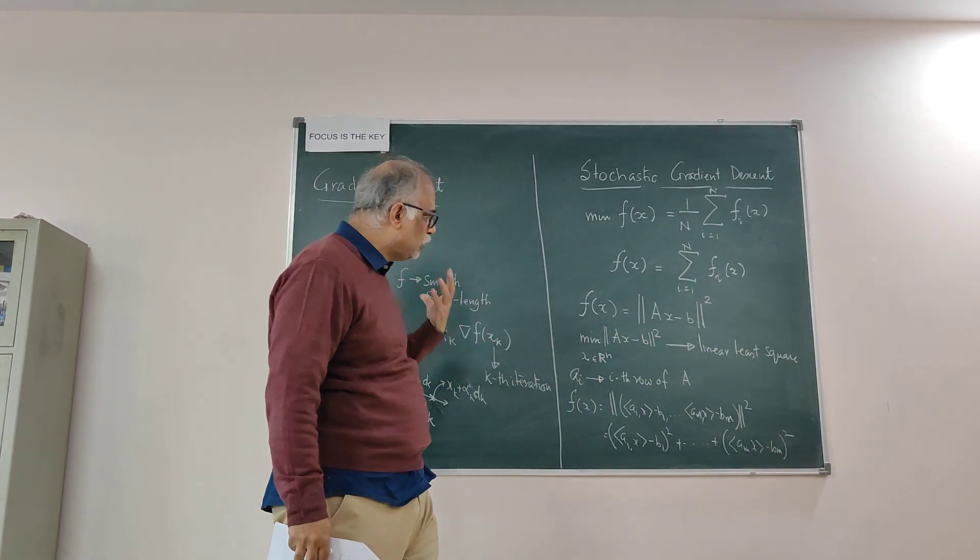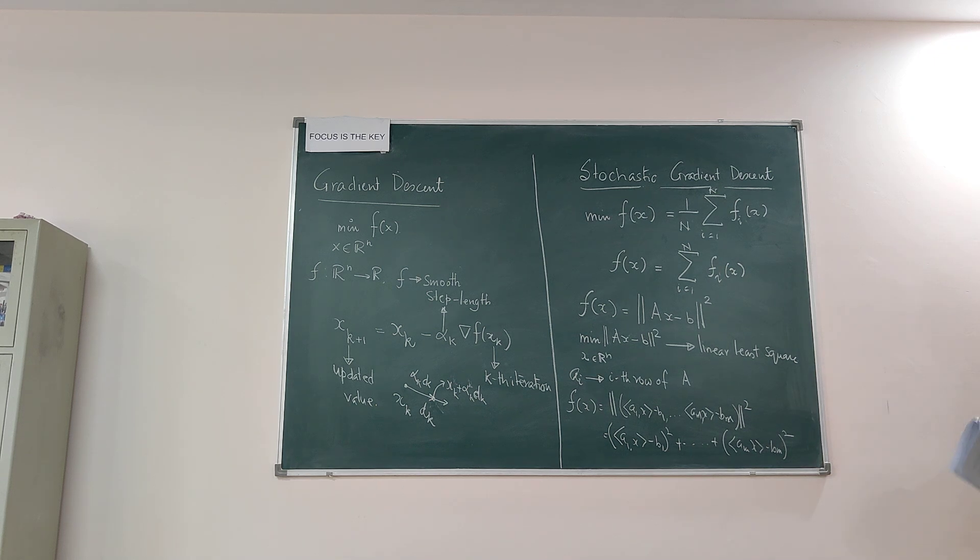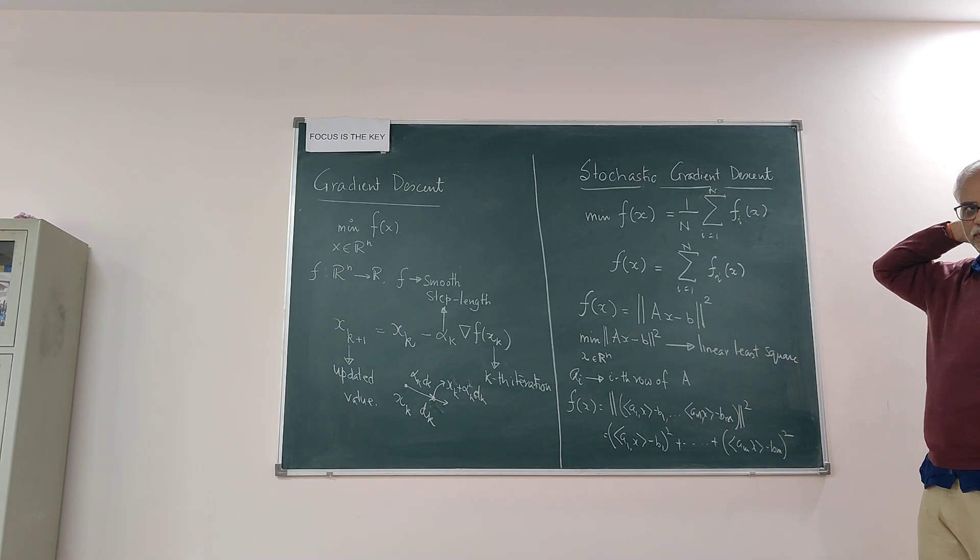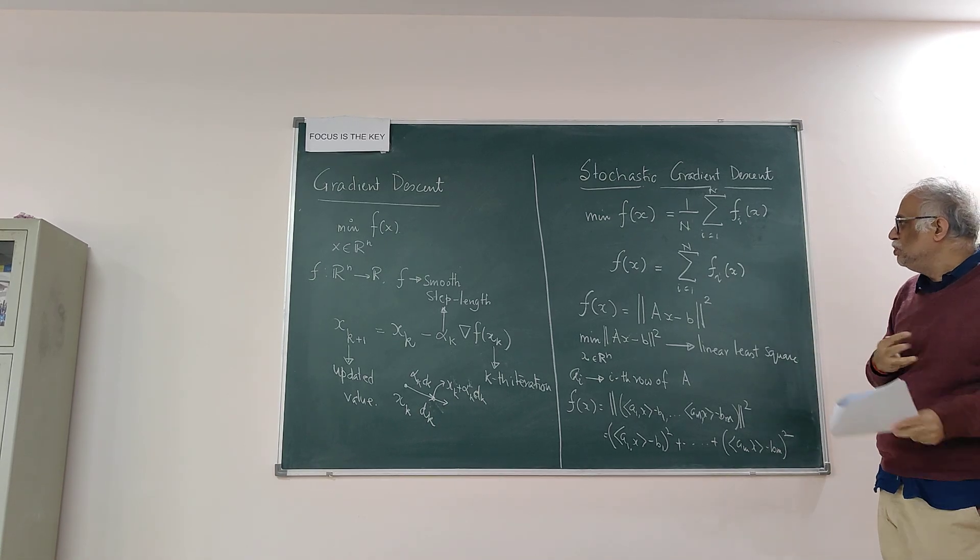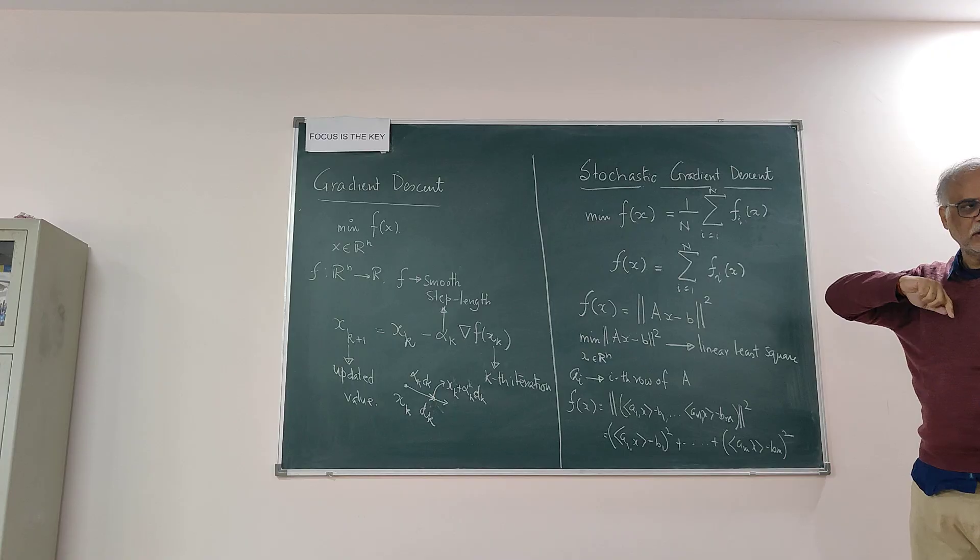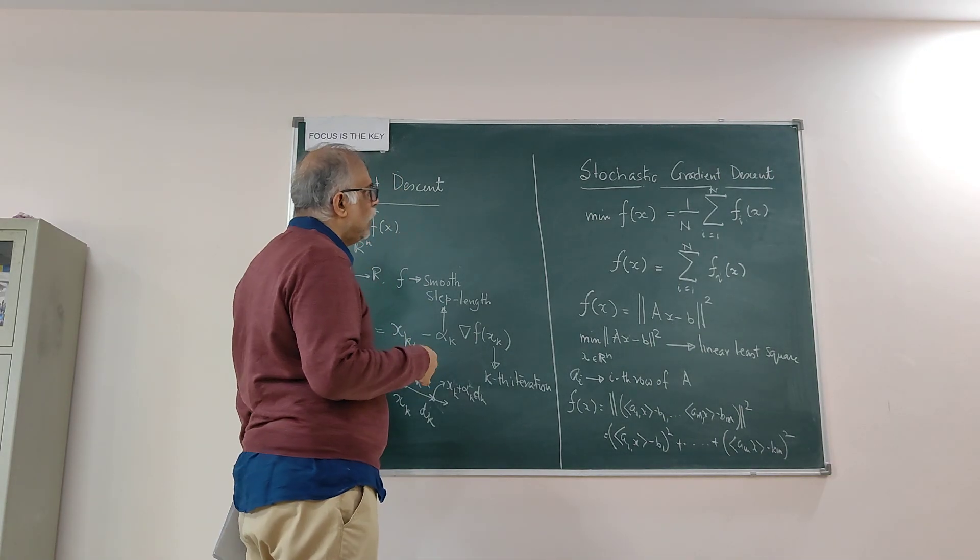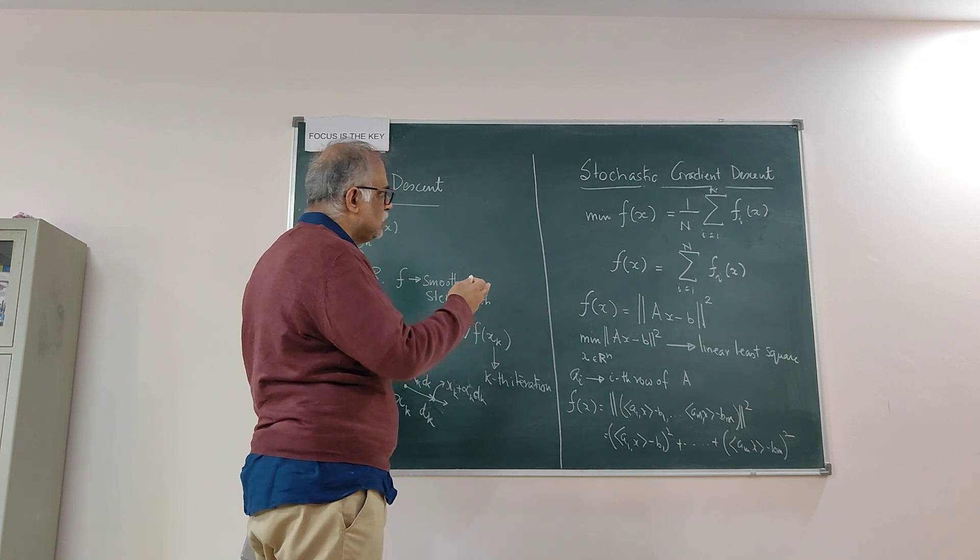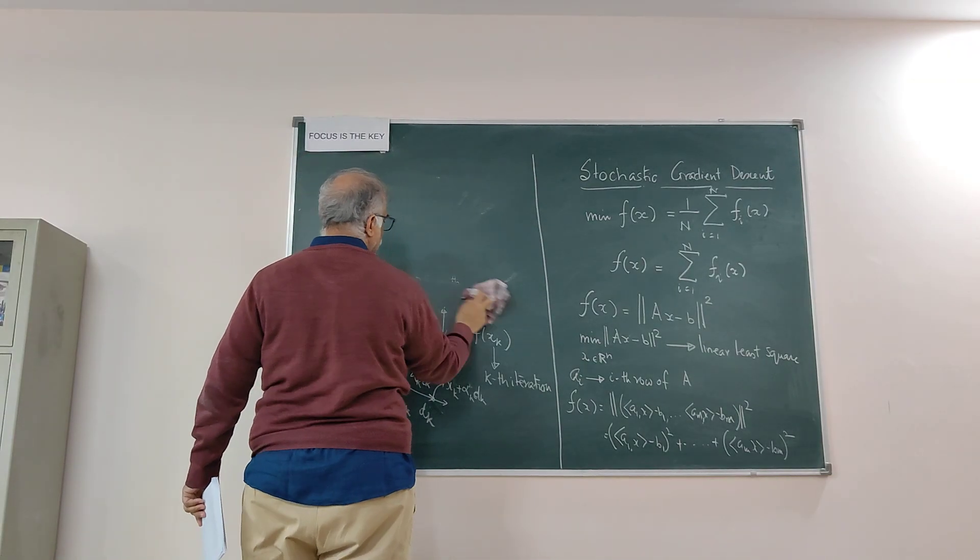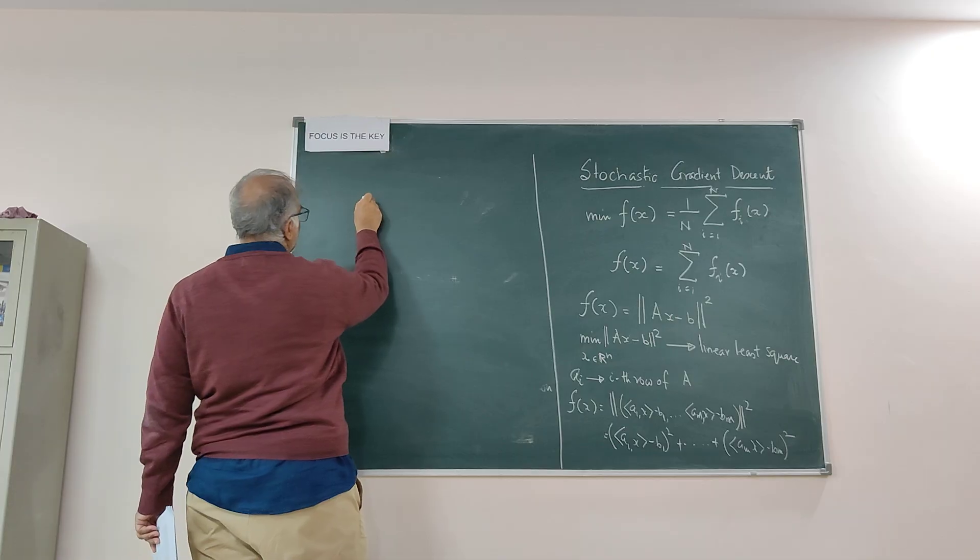Now we have to see the structure of the stochastic gradient method. The interesting part is that we randomly choose from these f_i's. We assume that these indices are distributed by some distribution, and we make a random choice by some method - maybe by generating random numbers.